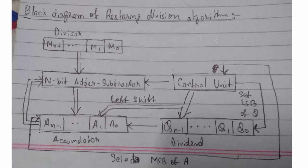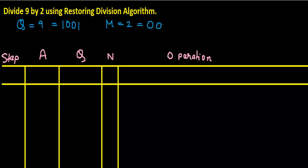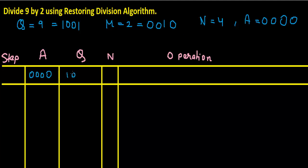Now I'll explain with the help of an example. We need to divide 9 by 2 using the restoring division algorithm. Q is 9, written in binary as 1 0 0 1. M is 2, with binary representation 0 0 1 0 in 4 bits. N is 4. A is initially set to 0 0 0 0. So our initial values are: A = 0000, Q = 1001, M = 0010, N = 4.